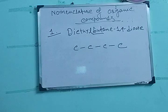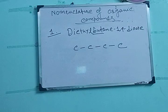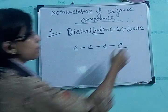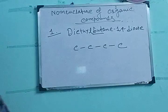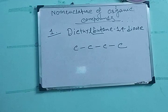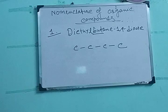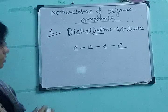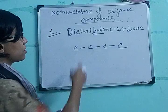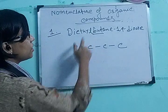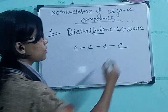Next is 'di-oate'. By seeing this suffix '-oate', you can easily understand that it is going to be an ester. And which ester? This is ethyl ester — diethyl ester.